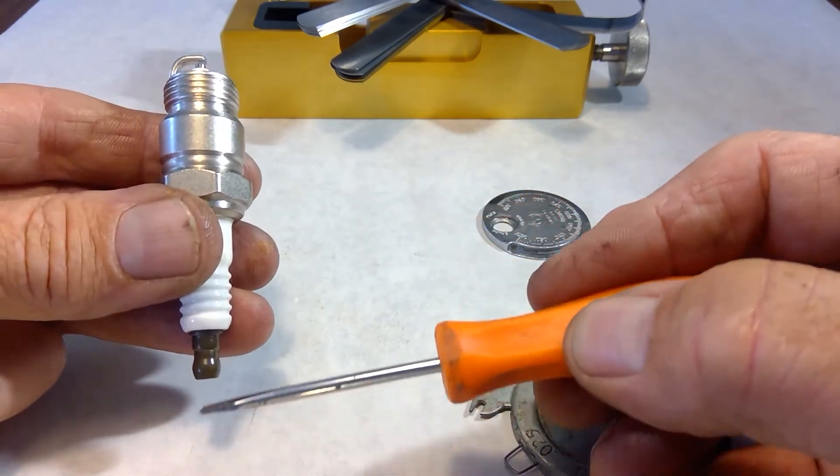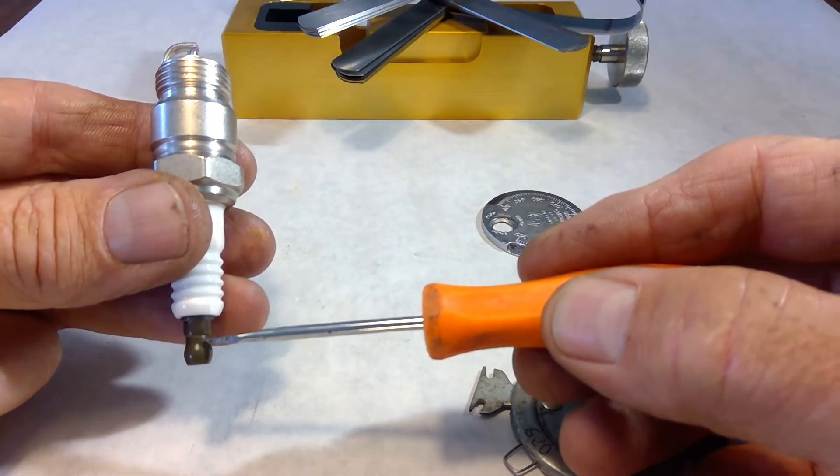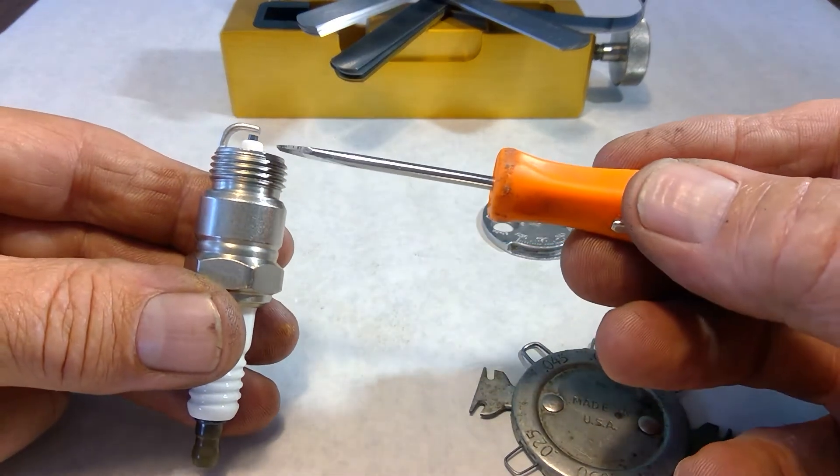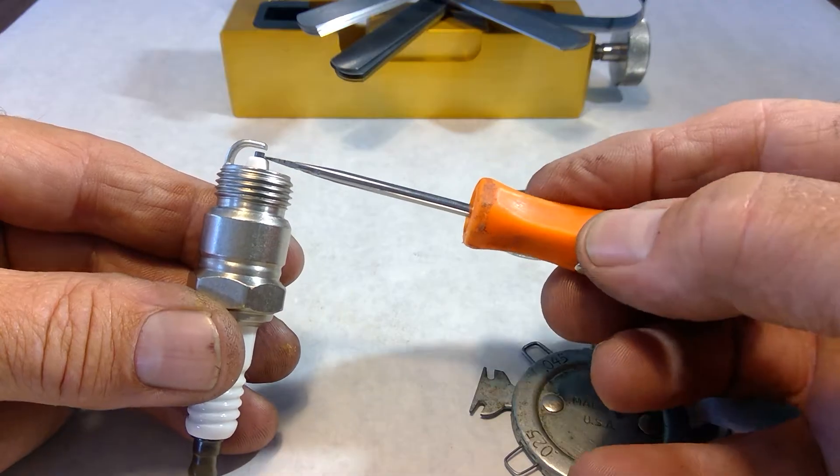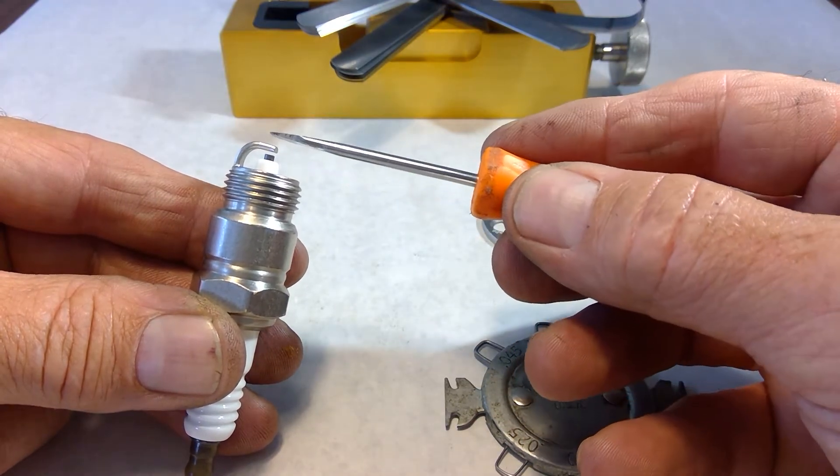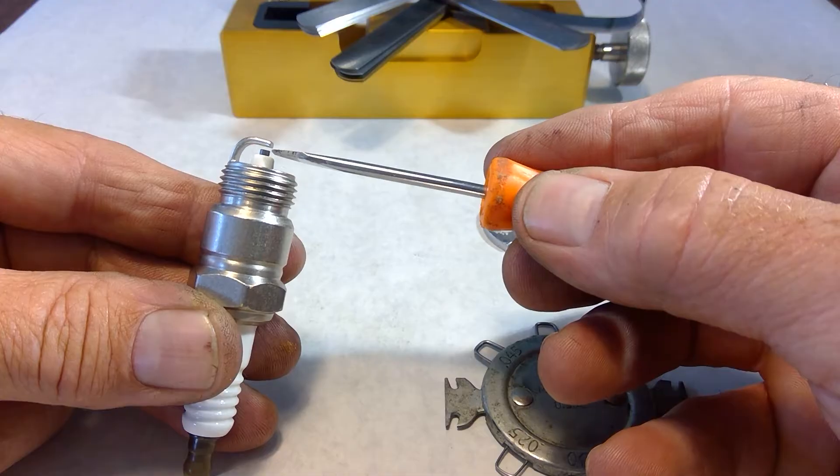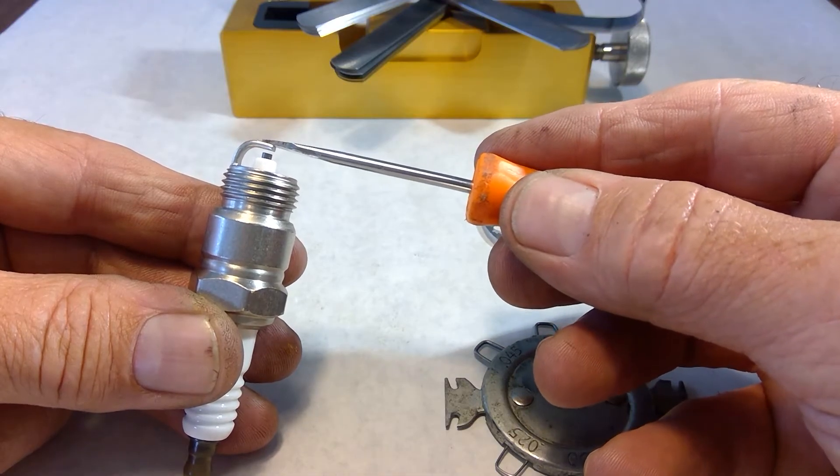Now, the spark plug works by applying a voltage here, which goes through the plug, and then that voltage has to jump across this gap to go to ground. When it jumps, it creates a spark.